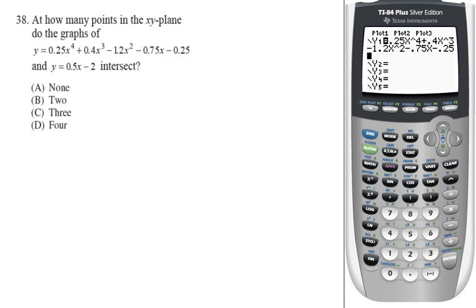And once you've double-checked that, you can hit enter and go down to y2 to put in the second one, and that would be 0.5x minus 2. And when you've checked that out, hit enter, and we have the two functions in.